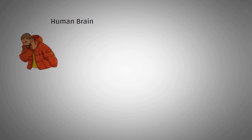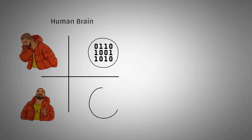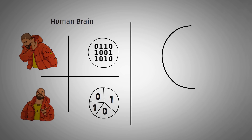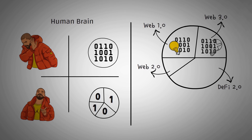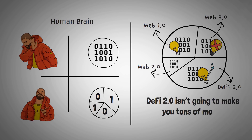First off, we as humans love to categorize things. We love making things black and white, putting everything into a neat category so that we can actually wrap our minds around it. That's exactly what was happening with Web 1.0, Web 2.0, and Web 3.0, and even DeFi 2.0 — basically bundling up ideas and collectively calling them something so it's easier to refer to them. With that in mind, DeFi 2.0 isn't some magical term that's just going to make you a bunch of money, but simply a name to categorize a new idea currently happening in the world of decentralized finance.